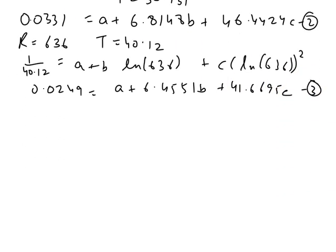Now, from equations 1, 2, and 3, we can solve for A, B, and C. So we get A as 0.8939, B as minus 0.2838, and C as 0.0231.